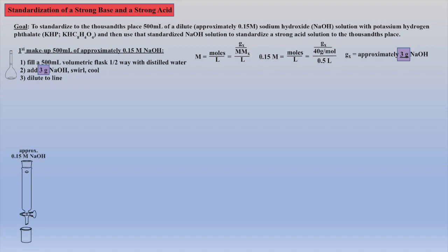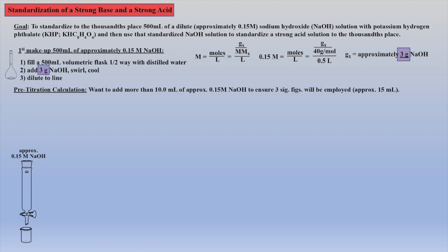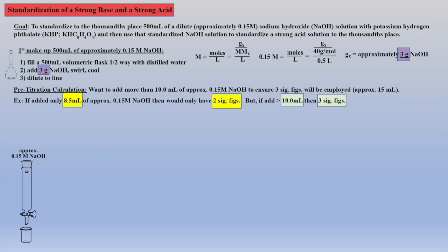The NaOH solution is added to a burette and the tip is flushed to remove any air bubbles. The next step is to perform a pre-titration calculation to figure out approximately how many grams of KHP are needed to ensure 3 significant figures past the decimal point when standardizing the sodium hydroxide solution. For example, if we add only 8.5 milliliters of titrant to reach the equivalence point, then only two significant figures will be used. However, if we add more than 10 milliliters, then we will ensure 3 sig figs. So let's base our calculation on adding 15 milliliters of the approximate 0.15 molar sodium hydroxide solution to ensure 3 sig figs.